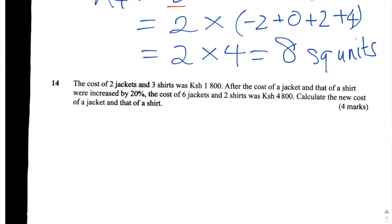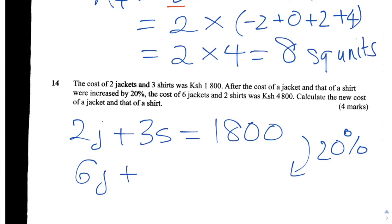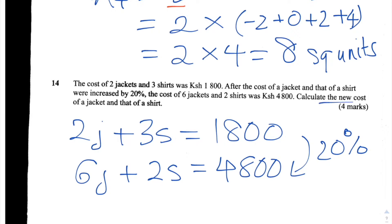So we're told that initially the cost of two jackets — I'm going to write shorthand J for jackets and S for shirts — so 2J plus 3S is equal to 1,800. We're told that there is a 20% increase in the price and that means six jackets and two shirts is equal to 4,800 shillings. We're supposed to calculate the new cost of a jacket and that of a shirt.